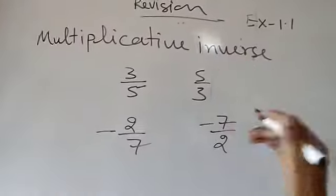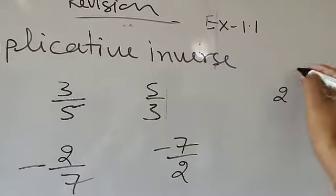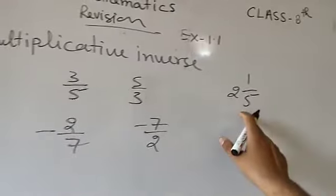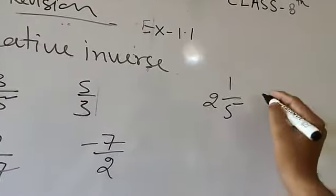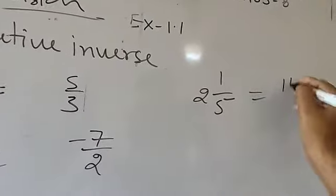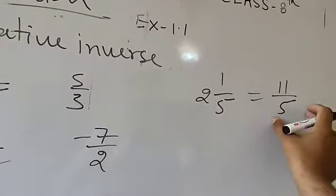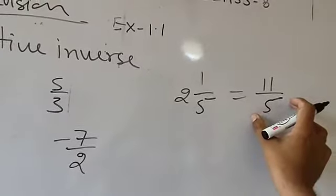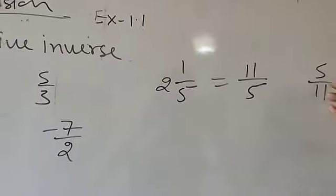If you are given a number like 2 whole 1 by 5 and asked to find the multiplicative inverse, first you need to convert that number into an improper fraction. So it will be 5 times 2 plus 1, which is 11. That will be 11 by 5. Now, what is the multiplicative inverse of 11 by 5? That will be 5 by 11.